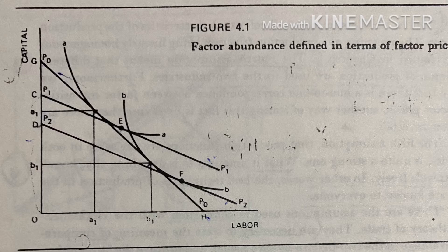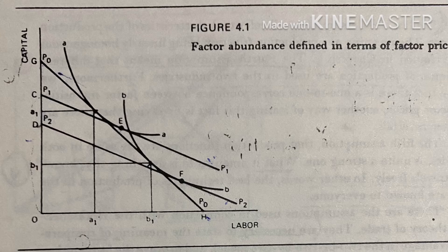Then one unit of good A will be produced with OA1 of capital and Oa'1 of labor. But capital and labor can be exchanged for each other in the ratio shown by the factor price line p0 p0. Therefore Oa'1 of labor is worth a1g of capital, and OA1 of capital is worth a'1h of labor. We said that one unit of good A would be produced with OA1 of capital and Oa'1 of labor, but we can view the line gh as a cost line.